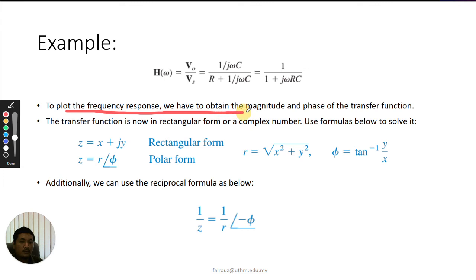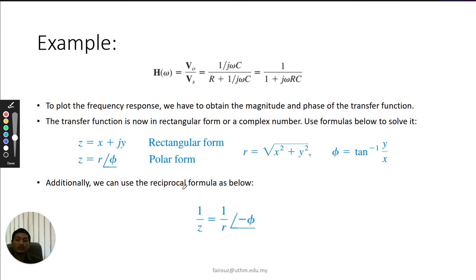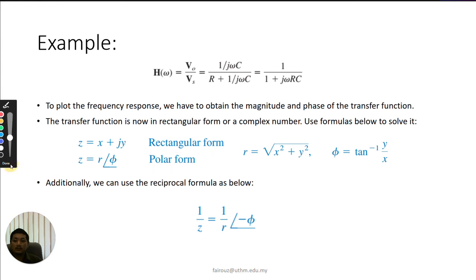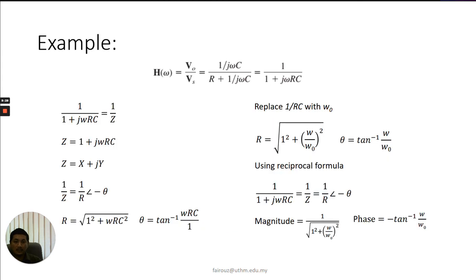To plot the frequency response, we need to obtain the magnitude and phase of the transfer function. The transfer function is a complex number, so we can separate it into rectangular form or polar form in order to get the magnitude and phase.